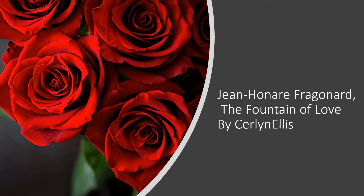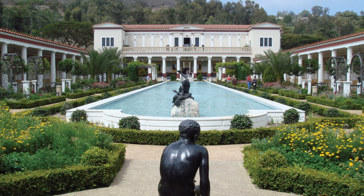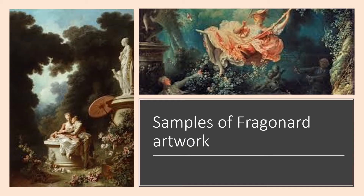Jean-Honoré Fragonard's The Fountain of Love, by Kerlin Ellis. Today we are heading to the J. Paul Getty Museum in Los Angeles to explore one out of the two versions of The Fountain of Love. It was created in France by Jean-Honoré Fragonard in 1785, and he was already known for his outstanding artwork of the Rococo period, such as The Swing and the love letters in the series The Progress of Love.